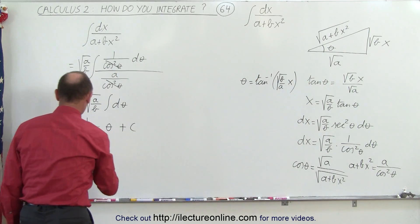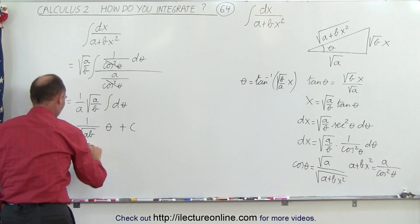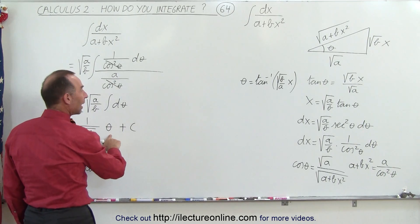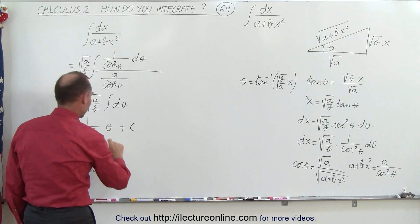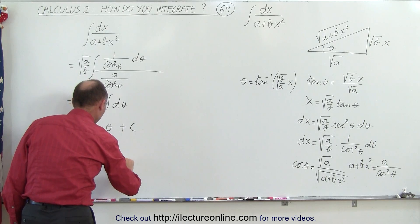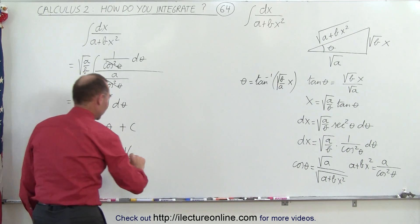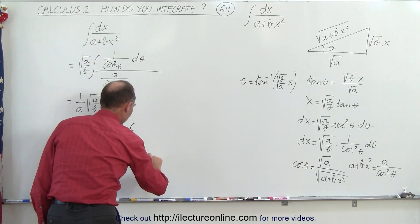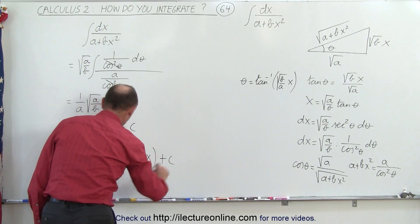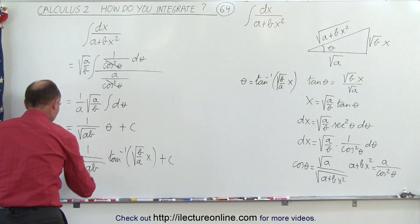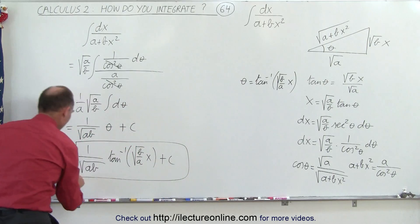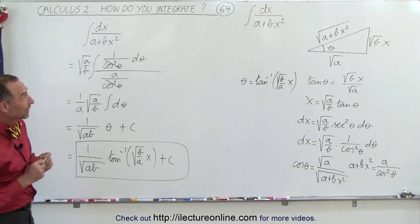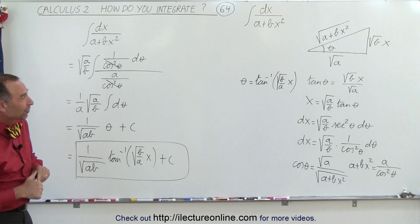That can go back in here, so this now becomes 1 over the square root of ab, times theta, which is the arctangent of the square root of b over a times x, plus a constant of integration. And there you have it — that's how we integrate dx over a plus bx squared.